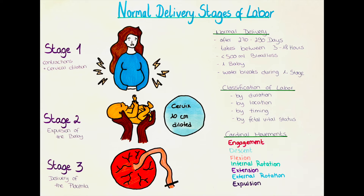The first three movements — engagement, flexion, and descent — usually occur together at the same time. Engagement begins when the biggest diameter of the head goes below the line of the pelvic inlet; it can occur several weeks before birth or as late as during labor. If the baby is not able to engage, it can indicate cephalopelvic disproportion — that the baby's head is too big to fit through the pelvis. Descent means the baby is slowly going further down, which happens during the first and second stage of labor as the cervix dilates and contractions push the baby toward the pelvis.